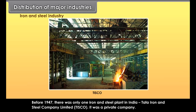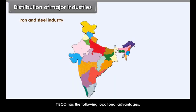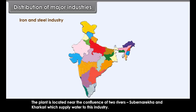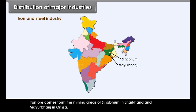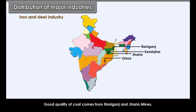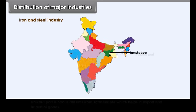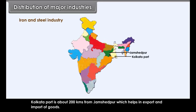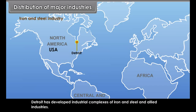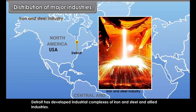Before 1947, there was only one iron and steel plant in India — Tata Iron and Steel Company Limited (TISCO), a private company. TISCO has several locational advantages: the plant is located near the confluence of two rivers, Subarnarekha and Karkari, which supply water. Iron ore comes from mining areas of Singhbhum in Jharkhand and Mayurbhanj in Orissa. Good quality coal comes from Raniganj and Jharia mines, manganese from Keonjhar district of Orissa, and Kolkata Port is about 200 km away, aiding export and import.